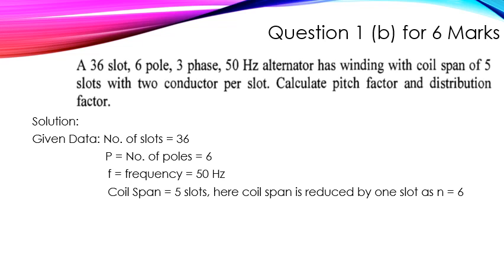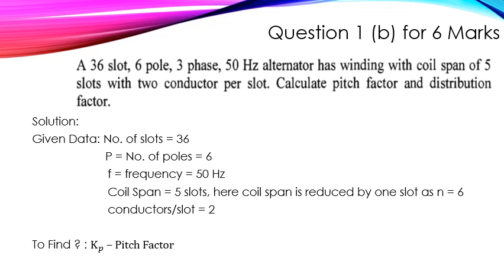For full pitch there are 6 slots per pole, but the coil span given is 5 slots. So the coil is shorted by 1 slot, meaning the coil is short pitched. The conductors per slot given is 2. We have to find the pitch factor and distribution factor.